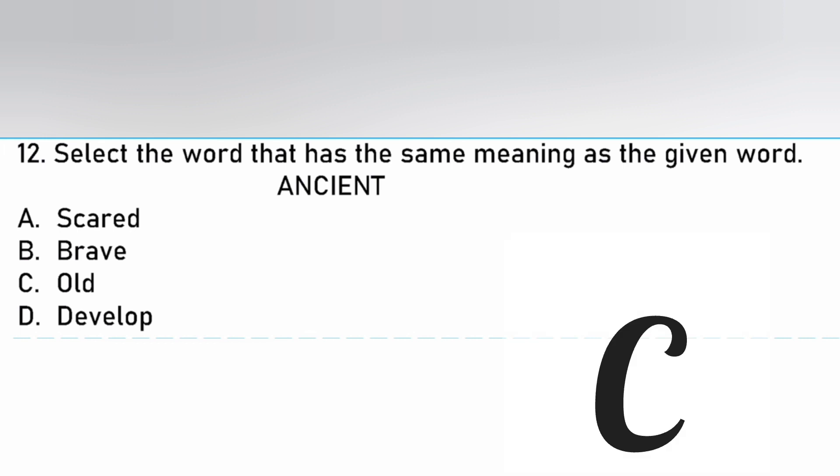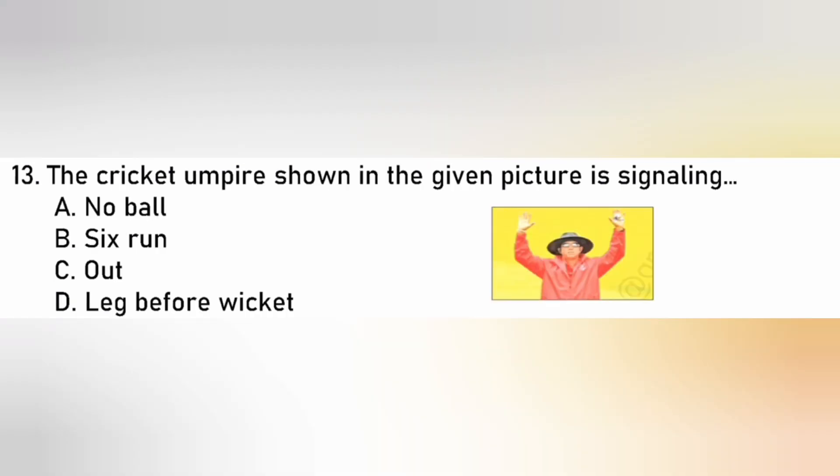The cricket umpire signal shown in the given picture is sign for? No ball, Six runs, Out, LBW (Leg Before Wicket). The answer is B. Six runs.